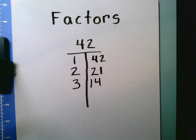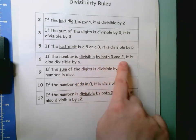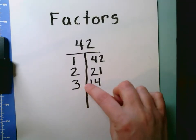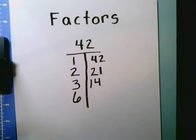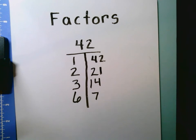The next number on our number line is 6. When I look at my divisibility rules, I know that if a number is divisible by both 3 and 2, it's also divisible by 6. Looking at the factors we've found so far, I see that we have 3 and 2 as factors, which means 6 is also going to be a factor. 6 times what equals 42? 42 divided by 6 would give me 7. If you know your basic facts of 6, you know that 6 times 7 is 42.